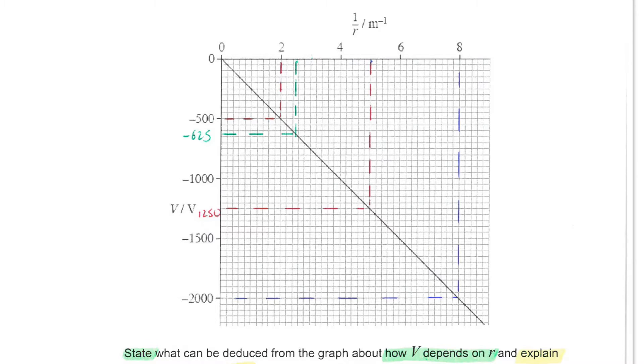Next, you're shown a graph of electric potential against the reciprocal of r, where r is the distance from a point charge q.